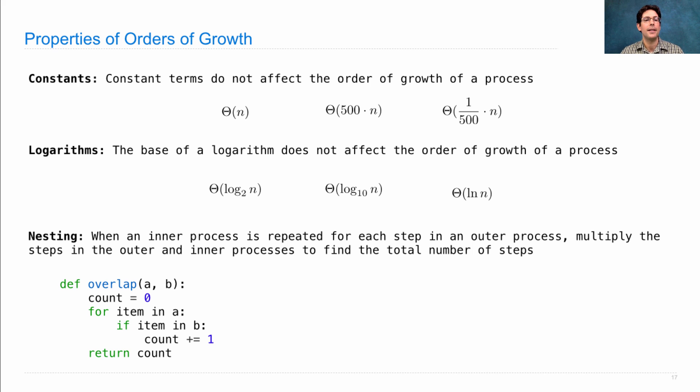So here's an example. Let's say A and B are two different lists, and we want to count the number of elements that overlap. Well, we're going to keep track of a count. We'll go through every item in A. That's the outer process, which has a number of steps that's the length of A.